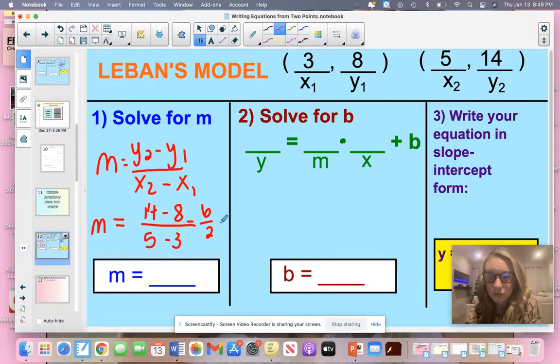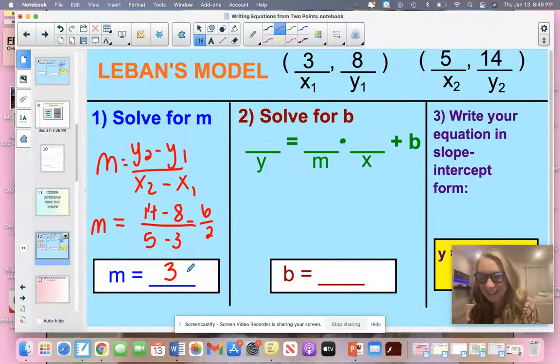So we plugged in our values and then we're just going to simplify. When you get 6 over 2, ask yourself, what is 6 divided by 2? And please tell me that you said 3 in your head. So we solved for M. We found that M is 3.